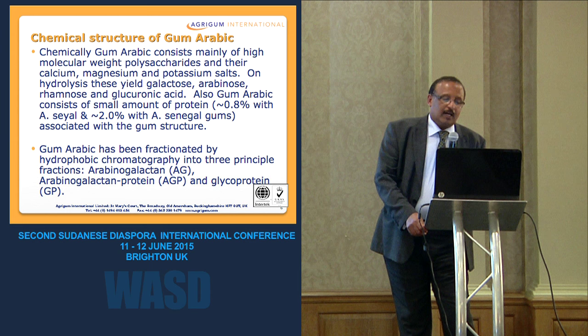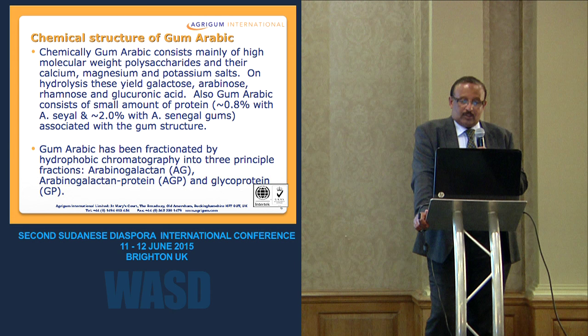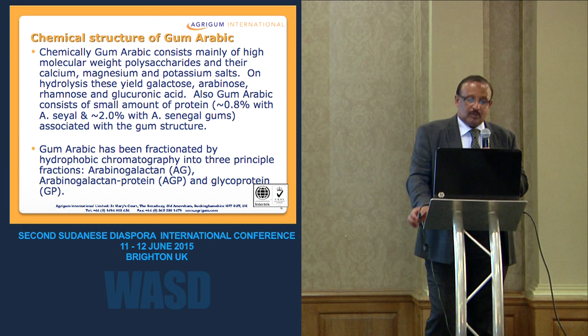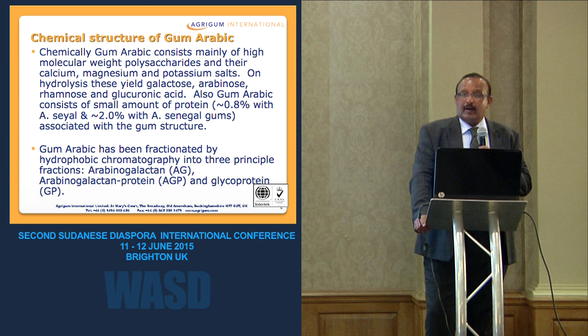The chemical structure of the gum is mainly high molecular weight polysaccharides. When you hydrolyze it, it yields monosaccharides: arabinose, galactose, and glucuronic acid. It also contains some minerals.